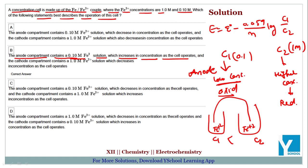The cathode compartment contains 1 molar iron²⁺ solution which decreases in concentration as the cell operates. At the cathode, reduction occurs: iron²⁺ converts to iron atoms, so iron²⁺ ion concentration decreases.